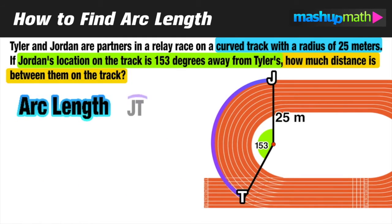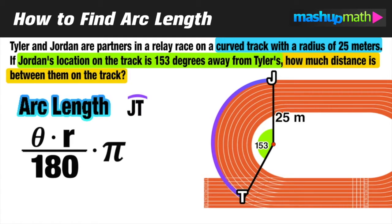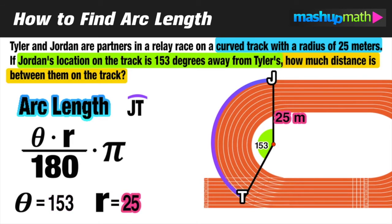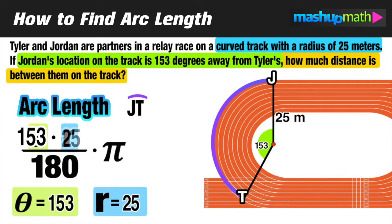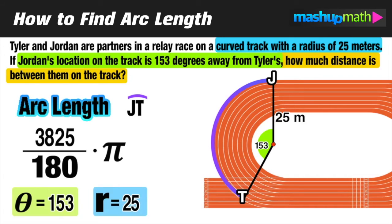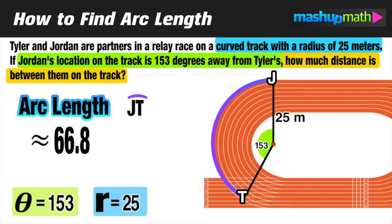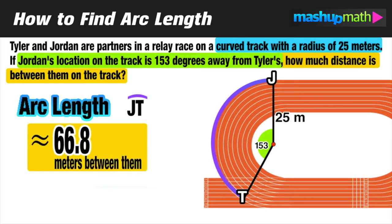Therefore, we're going to use the arc length formula to find the length of arc JT. For the arc length formula, we need two pieces of information: the measure of theta, the central angle, which is 153 degrees, and the length of the radius, which is 25 meters. We substitute those values into the formula — replace theta with 153 and r with 25 — and evaluate. We can approximate the arc length between the two runners to be 66.8 meters on the track.